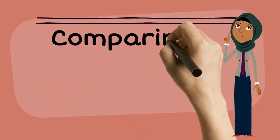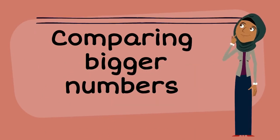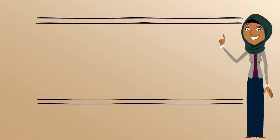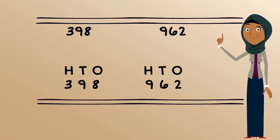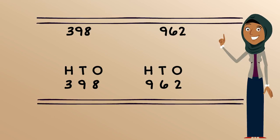Let's see how we can compare bigger numbers. In order to compare bigger numbers, we need to label each digit according to the value in the number. Number 398 has 3 hundredths, 9 tenths, and 8 ones. Number 962 has 9 hundredths, 6 tenths, and 2 ones.